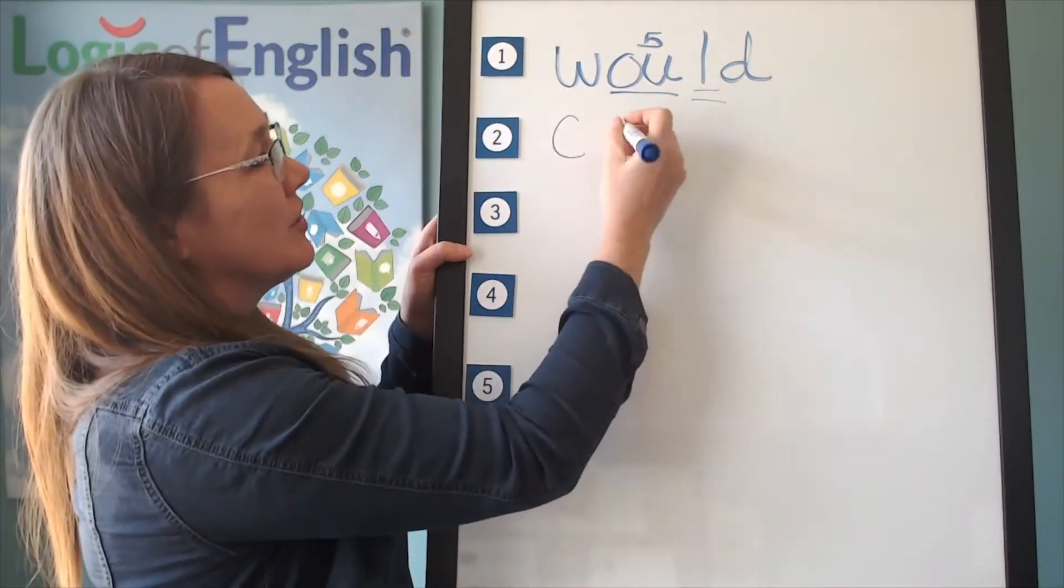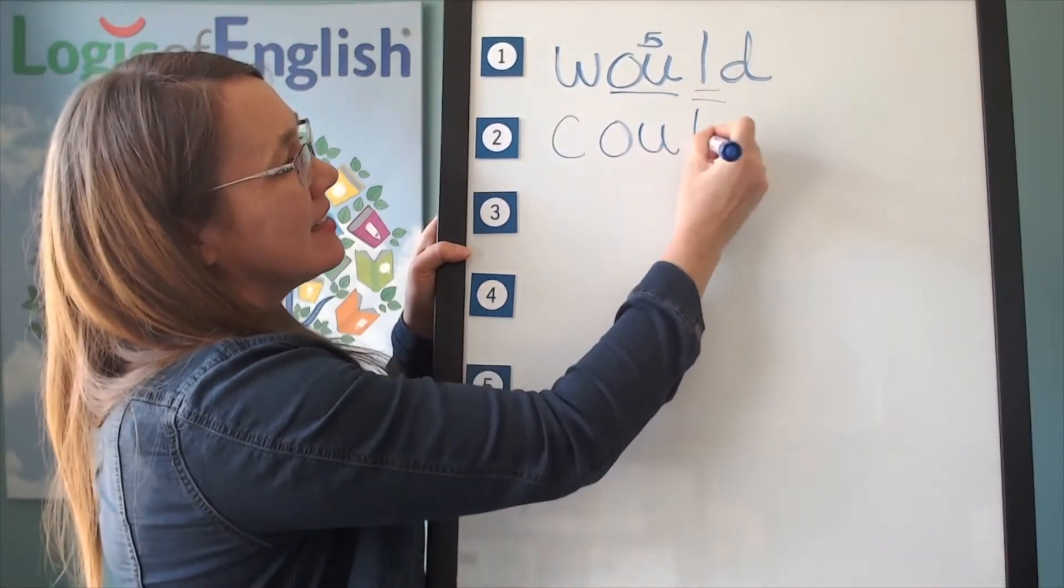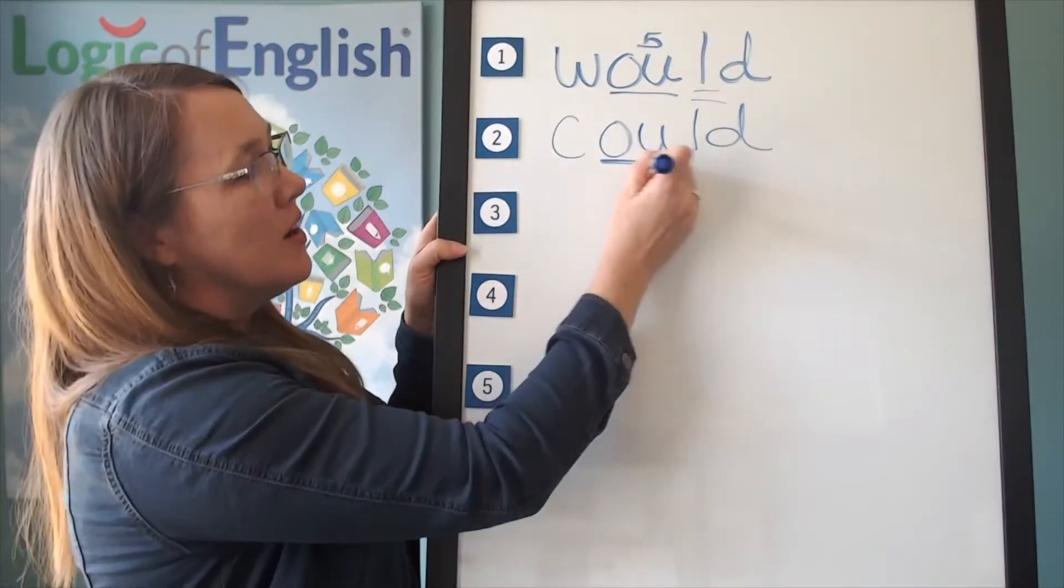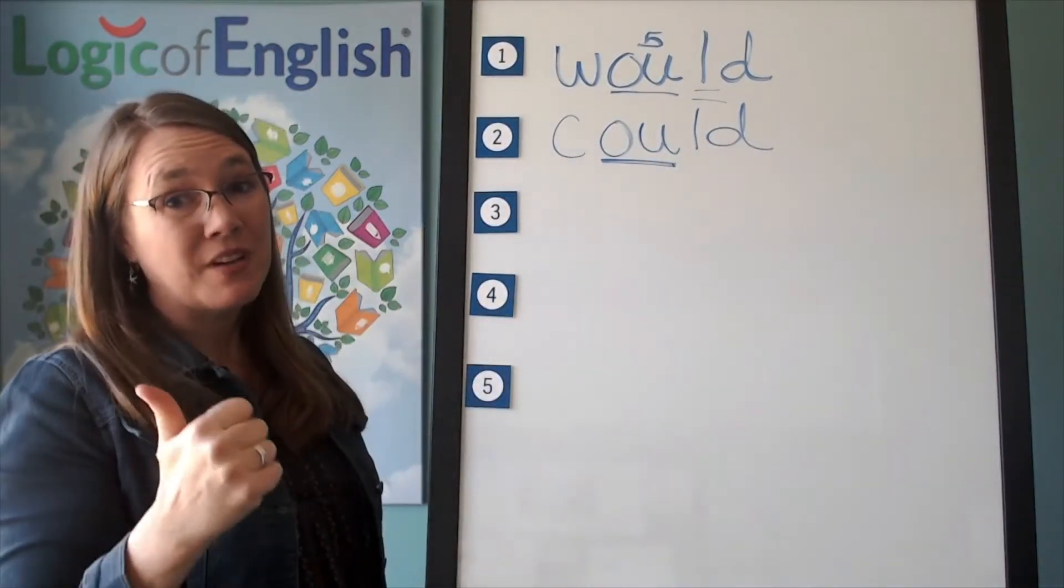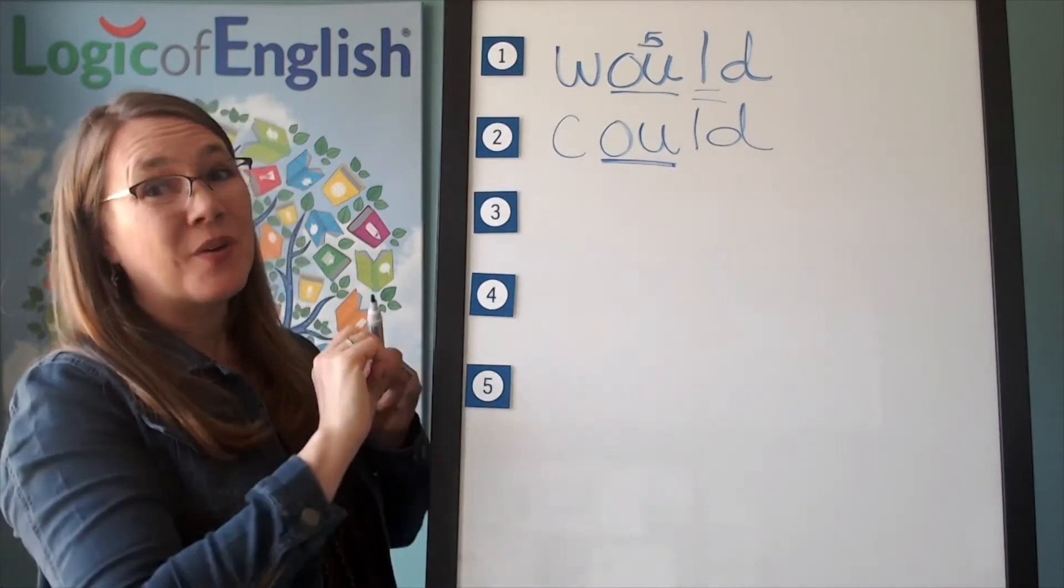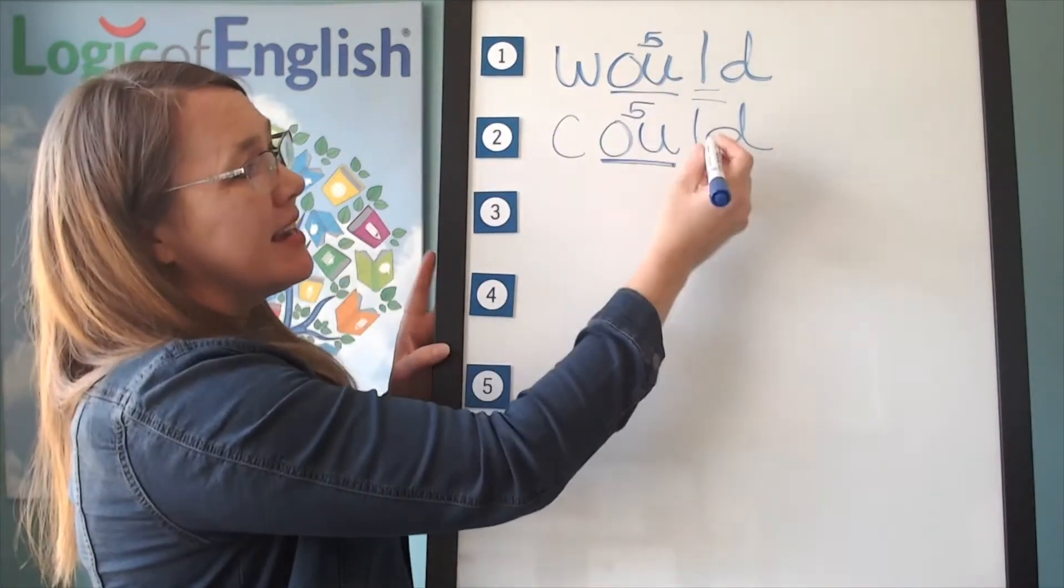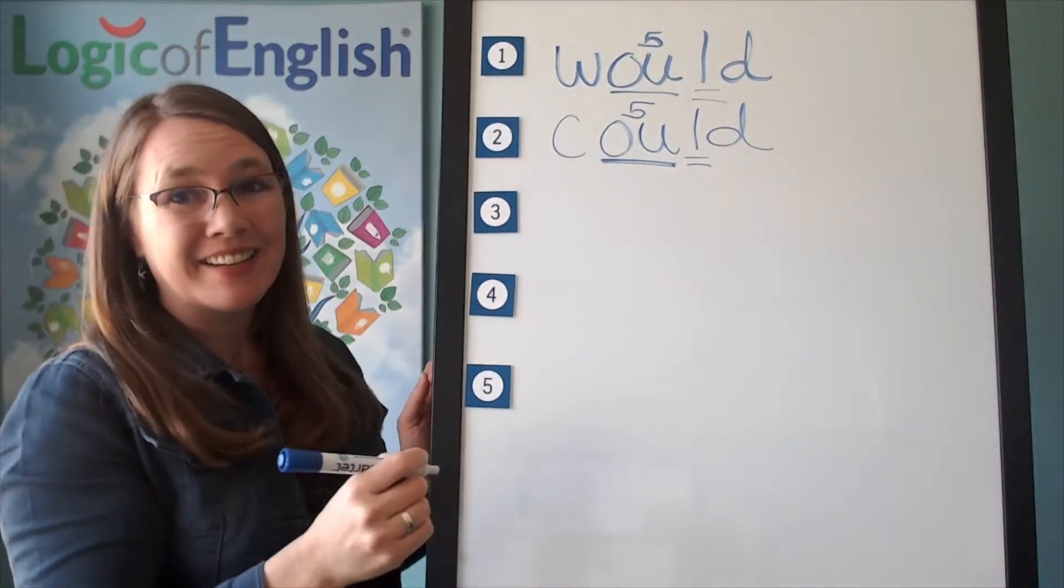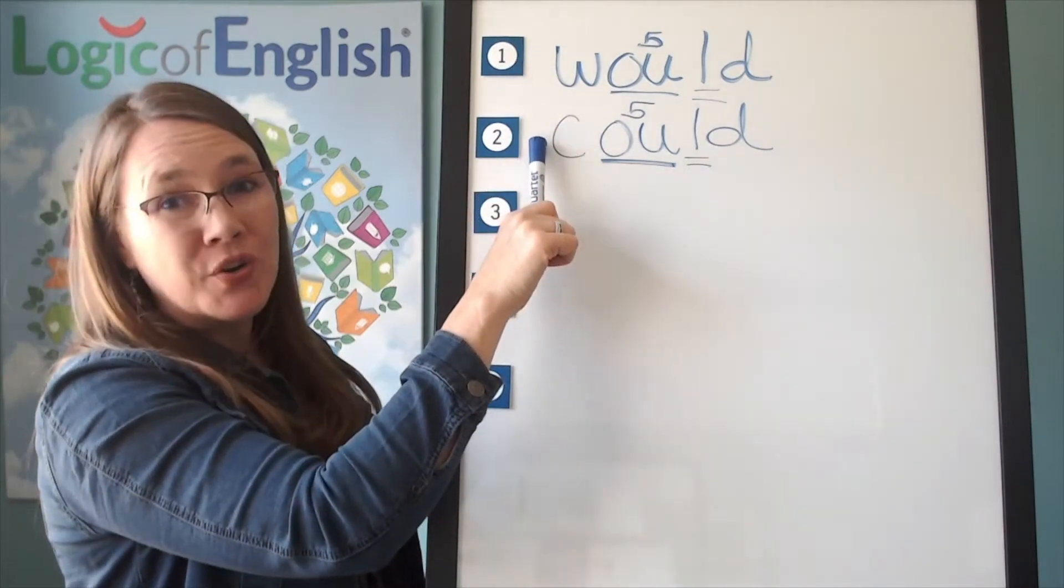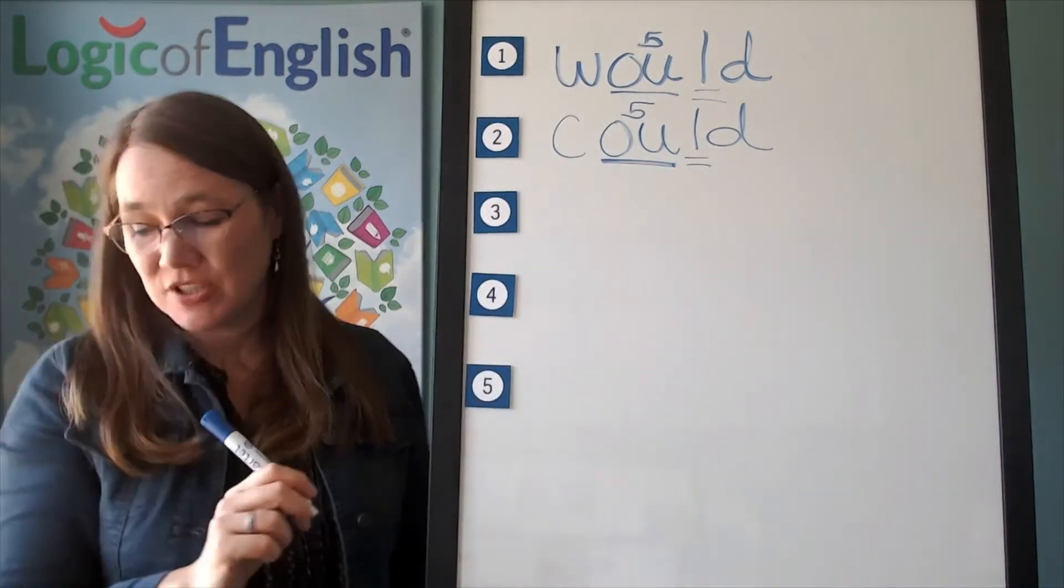Excellent. Now help me write it. Kuh, uh. Silent L. Duh. How will we mark it? Well, underline the uh. What sound of ow, o, oo, uh, uh is in could? You're right. The fifth sound. And we'll double underline the silent L. Do you see a pattern? Would, could. I see a pattern too.